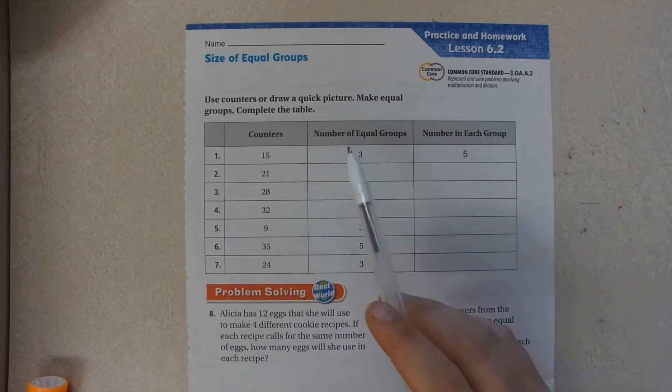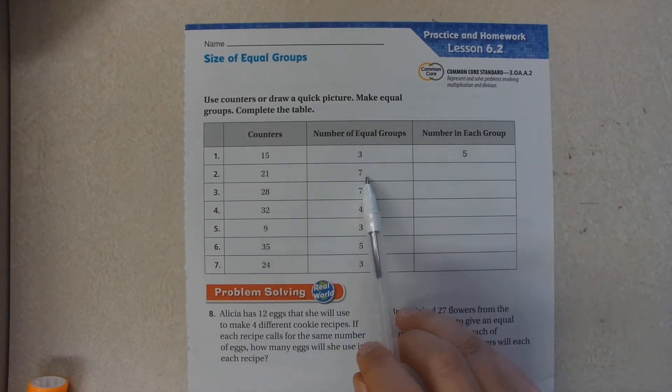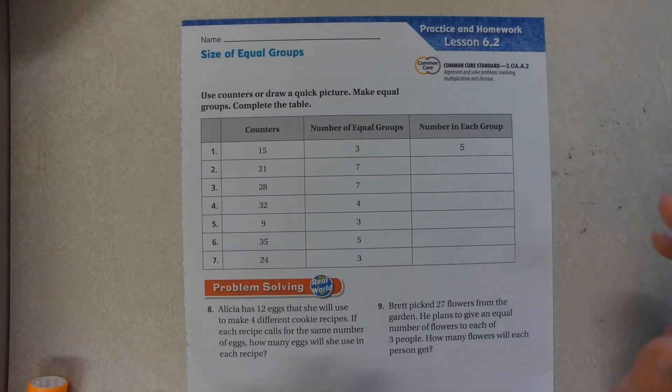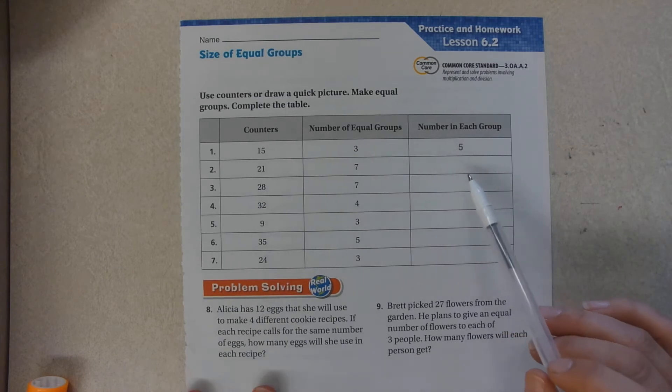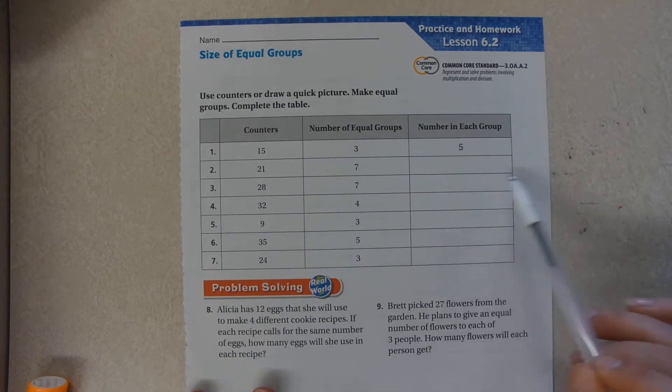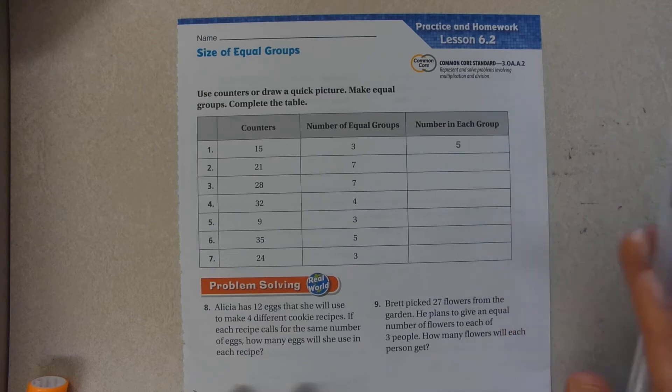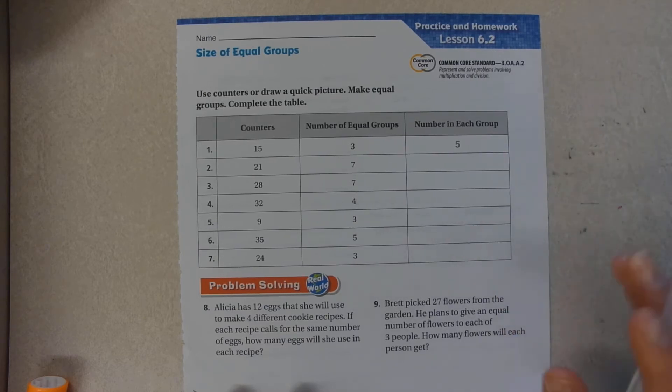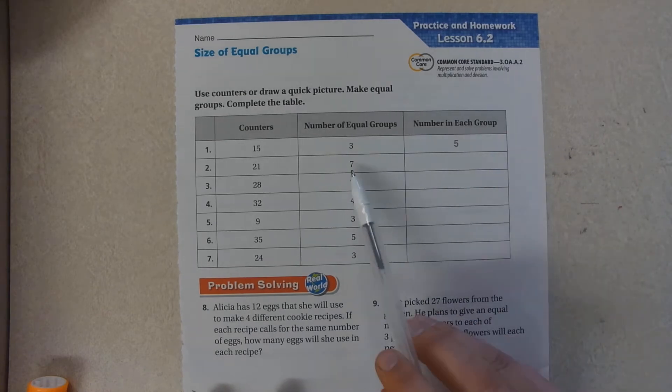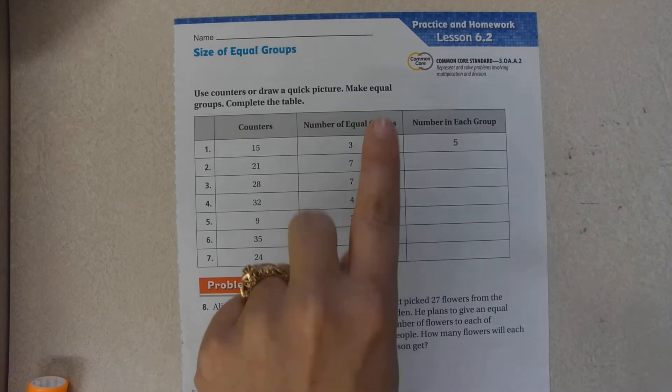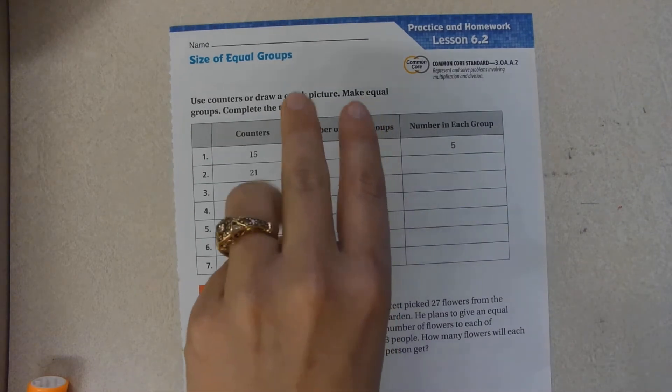So how many times does seven go into 21? There's multiple ways to do this. You can grab 21 things of cereal or 21 coins, or you can draw 21 lines and you can separate it, or hopefully you know how to skip count by sevens. Seven, 14, 21.